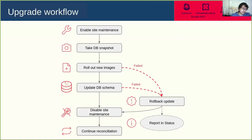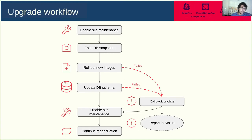So how does the upgrade workflow look? The operator will first put the site in maintenance mode — a state where it doesn't allow any writes, but the site will still be accessible. Then the operator takes a DB snapshot of the current state. Then it rolls out new images of the new version, which will eventually roll out new pods. Once the new pods are running, the operator tries to update the DB schema — a required part for Drupal updates. If something fails in either of these steps, the operator performs a rollback and updates the status of the custom resource accordingly. After this it puts the site back out of maintenance mode and continues to reconcile. At the end, if we have a successful update, we'll have a new version of the Drupal site serving requests; if not, we'll still have the same old version serving requests.